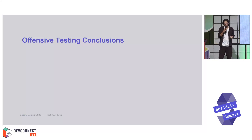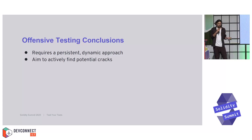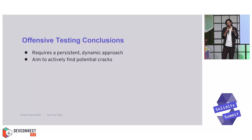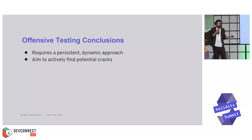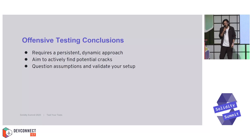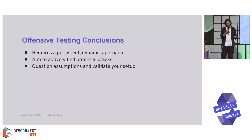Some conclusions on the offensive testing side: it required a persistent, dynamic approach. We only want to find one potential crack because this can lead to an exploit — we only want to invalidate one invariant. In contrast to defensive testing, where we want to robustly test from multiple angles, here it was very important to question any assumptions we were making in the tests and to validate our entire setup.